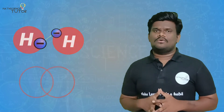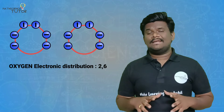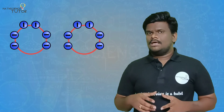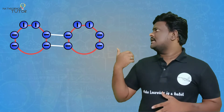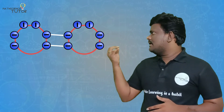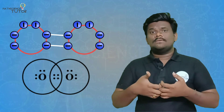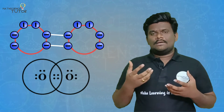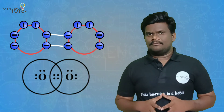Oxygen contains eight electrons — two electrons in the first energy level and six electrons in the second energy level, which is the outermost shell for oxygen. So oxygen has six valence electrons. These six valence electrons are arranged so that oxygen molecules achieve octet stability. Oxygen atoms are joined by a double bond between the two oxygen atoms.